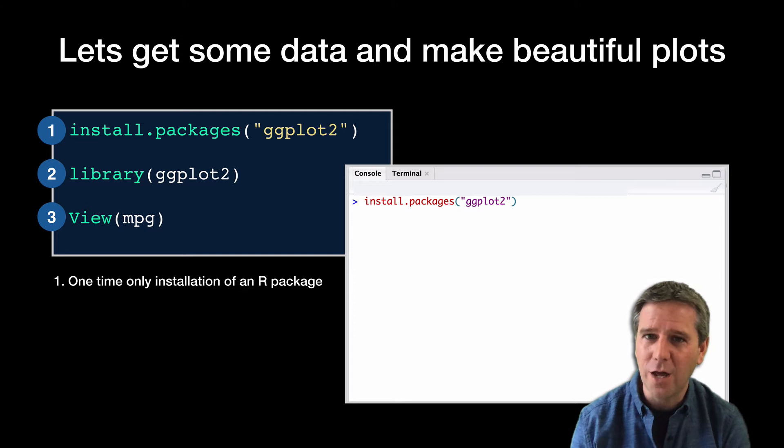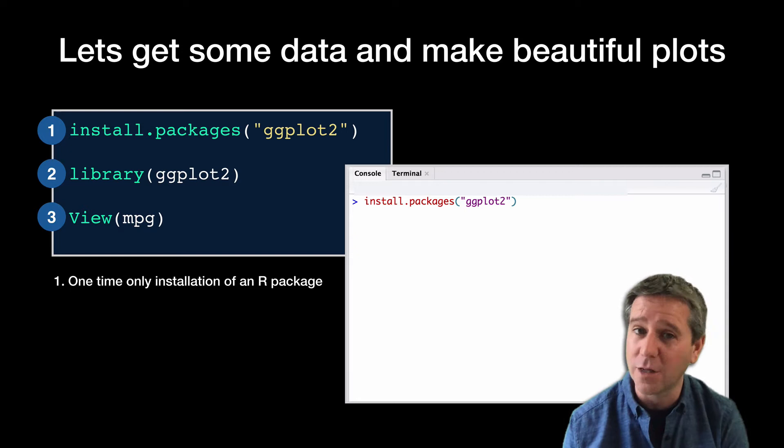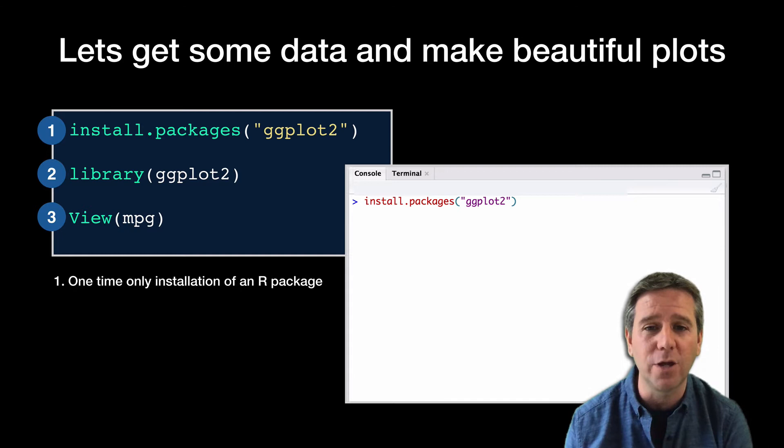The first thing we're going to do is install the ggplot2 package. Remember, this is an add-on package for R — it doesn't come installed with R. It's like going to the App Store and getting a new app to allow your phone to do new things. We're going to issue the install command, then load up the package so we can use the functions, and then load some example data that ships with ggplot2.